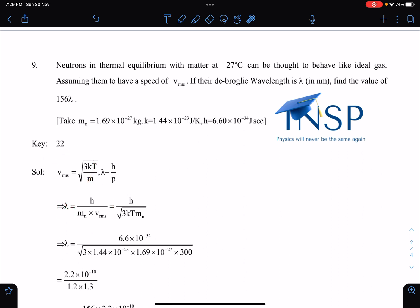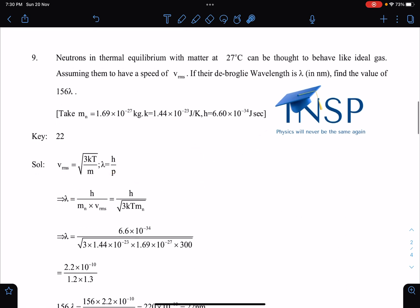And we can just substitute the value of this v_rms, all right. Basically h by lambda is equal to mv, we are substituting here. And after that simple calculation is there, so it's a very beautiful problem.